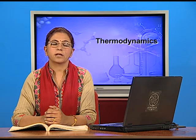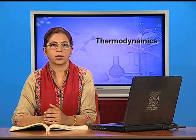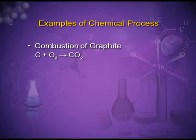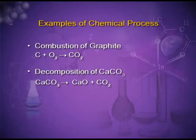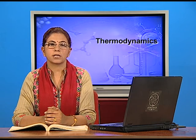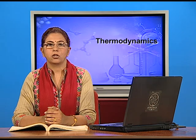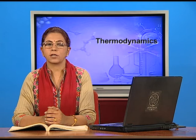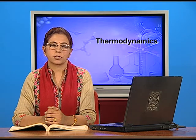In physical processes, only the state changes but the chemical formula remains the same, that is H₂O. But in a chemical process, the chemical formula is changed. For example, combustion of graphite: carbon plus oxygen gives carbon dioxide. Another example is decomposition of calcium carbonate or decomposition of ammonia. The reactants and products have different chemical formulas, so all processes in which a new thing is formed are chemical processes.